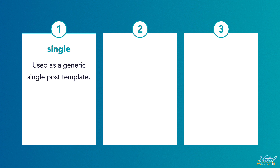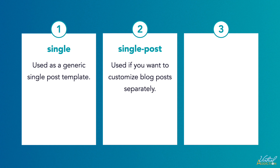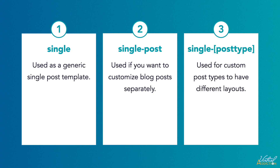The single.html is used as a generic single post template. You can create something called single-post.html if you want to customize blog posts separately — this is ideal if you're wanting to customize the look of your blog content without affecting other pages or post types. Finally, you can use single- followed by a specific post type, commonly used for posts that have different layouts where the post type would be replaced with a category, tag, or some other metadata. We'll concentrate on the single template in this exercise, but we will visit the others in additional videos.